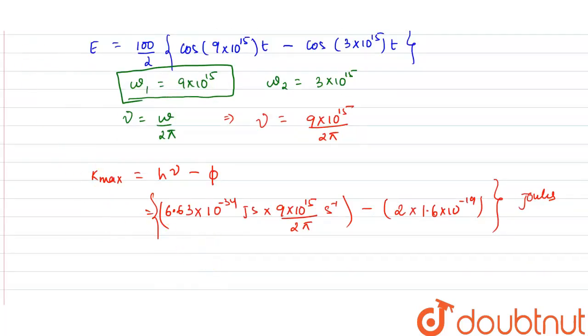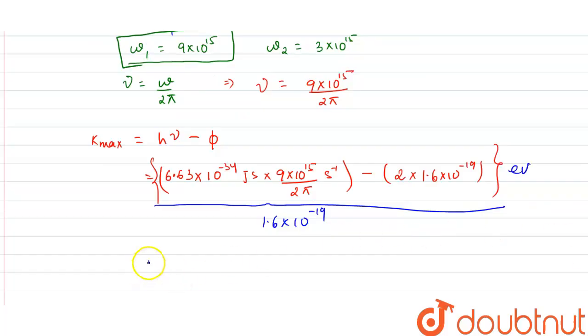So to get it in electron volt, divide by 1.6 into 10 to the power minus 19, so the unit will be electron volts. So on solving we get the maximum kinetic energy and it will come out as 3.93 electron volts.